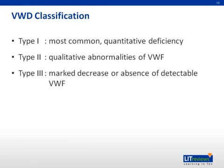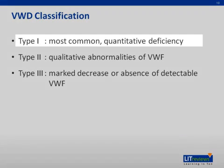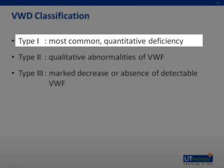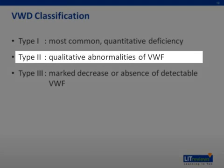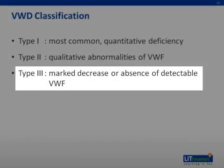Von Willebrand's disease itself is subclassified into three subtypes. Type I is the most common and results in a quantitative deficiency with varying degrees of decreased von Willebrand factor antigen in the bloodstream. Type II are qualitative abnormalities — that is, abnormalities in the function and mechanism of action of the von Willebrand factor. Type III involves marked decreases or complete absence of von Willebrand factor itself.